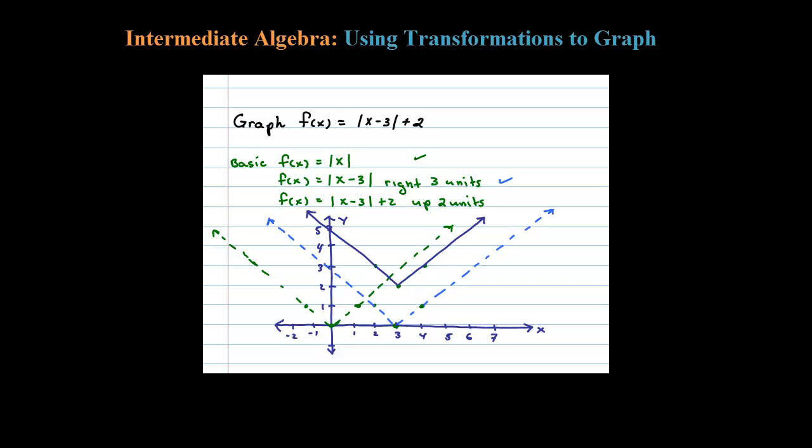So this would be our final graph. The answer here: f of x equals absolute value x minus 3 plus 2.